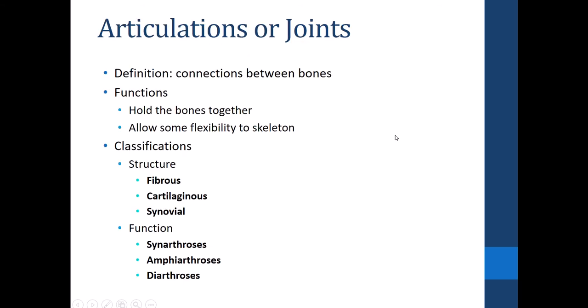To start, we have a basic definition: an articulation or joint refers to the connections between bones. Now that you know all the different bones, we're going to look at how all the puzzle pieces fit together. Joints have two main functions: they hold the skeleton together, and they also allow the skeleton to have flexibility. Without joints, the bones would be glued together and we'd be stiff and unable to move.